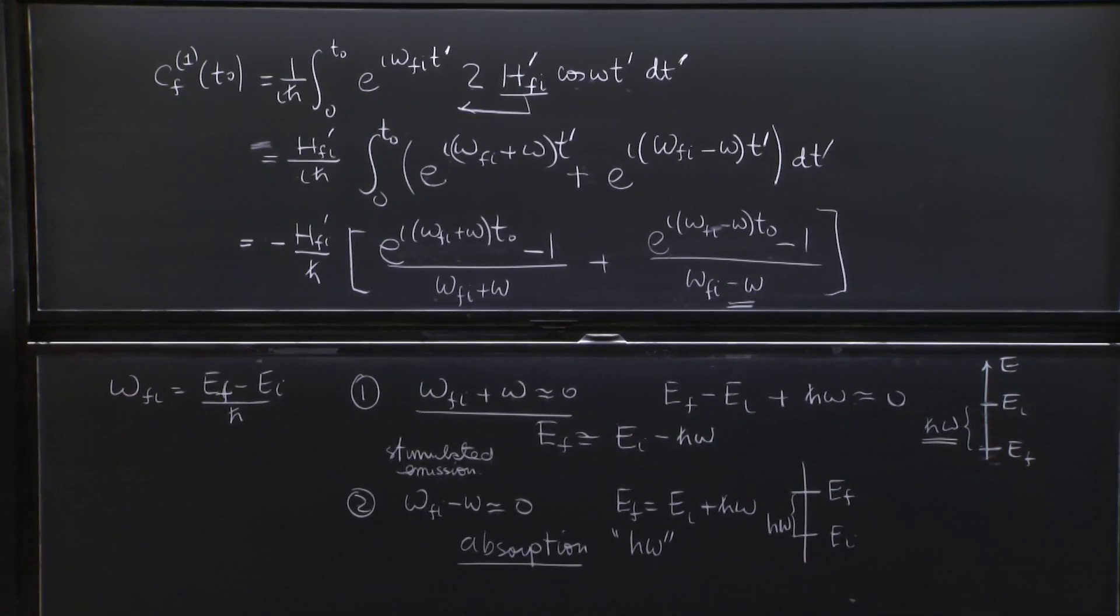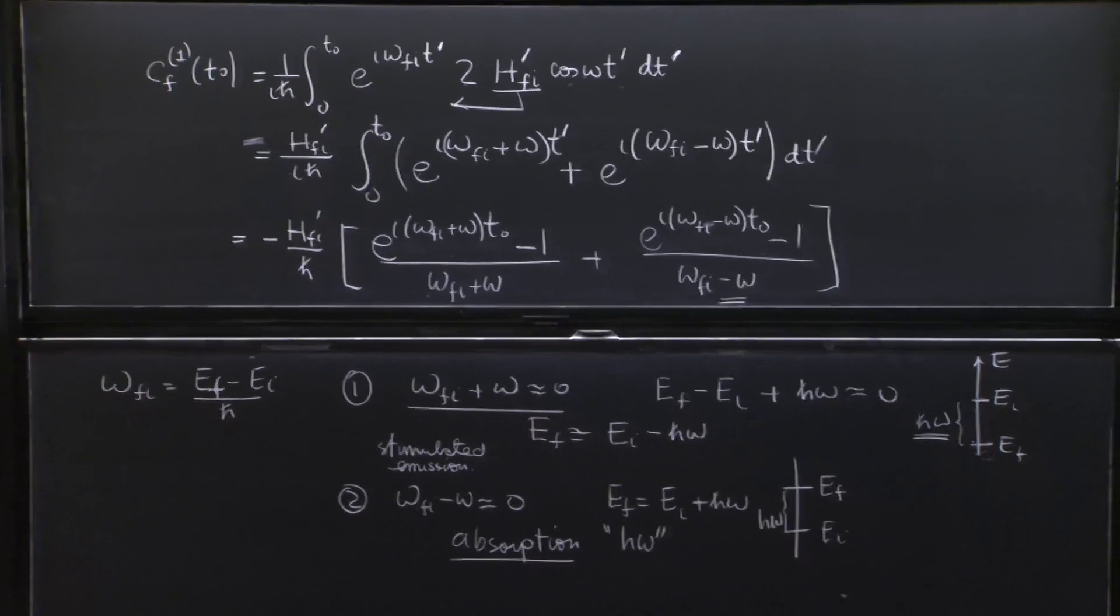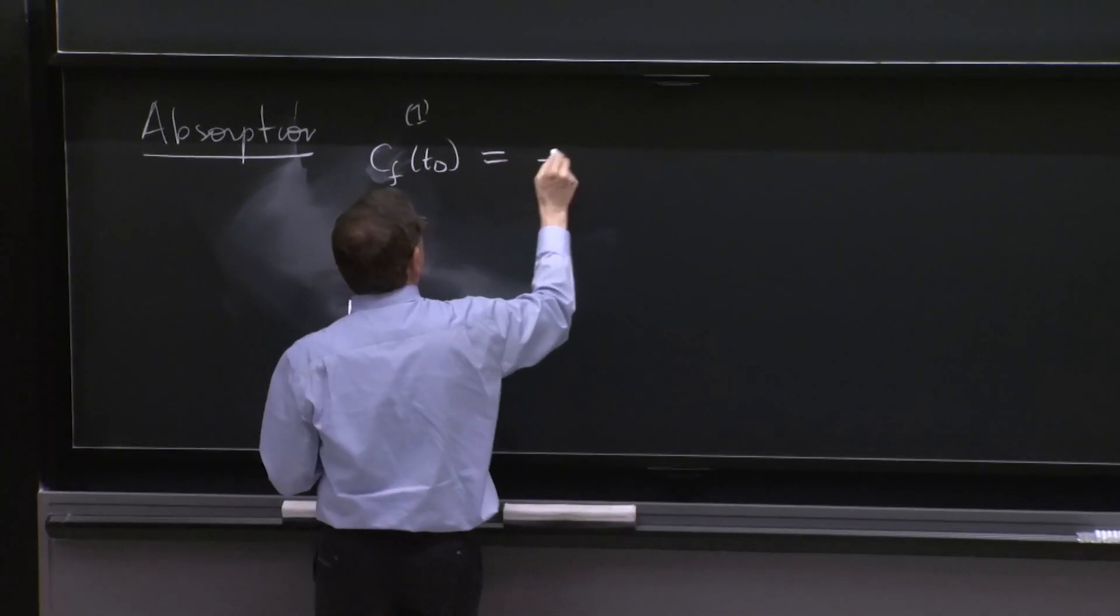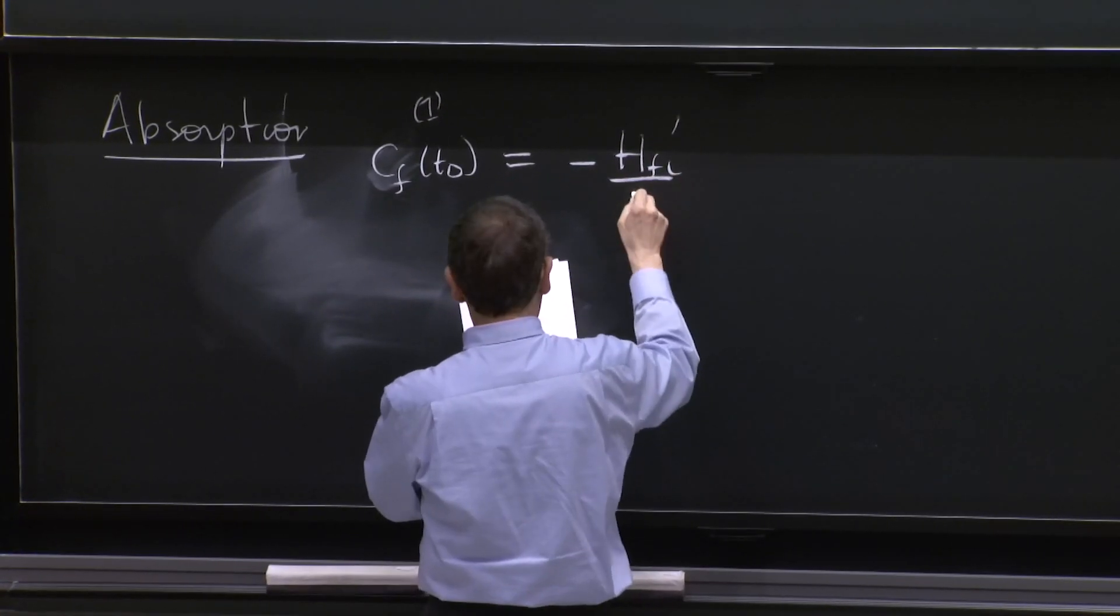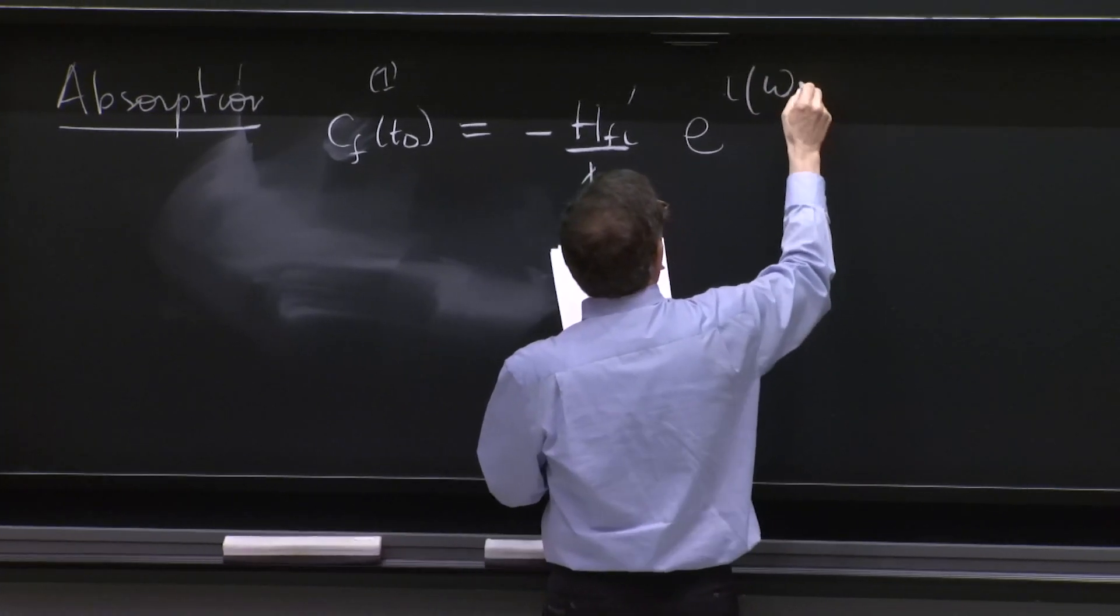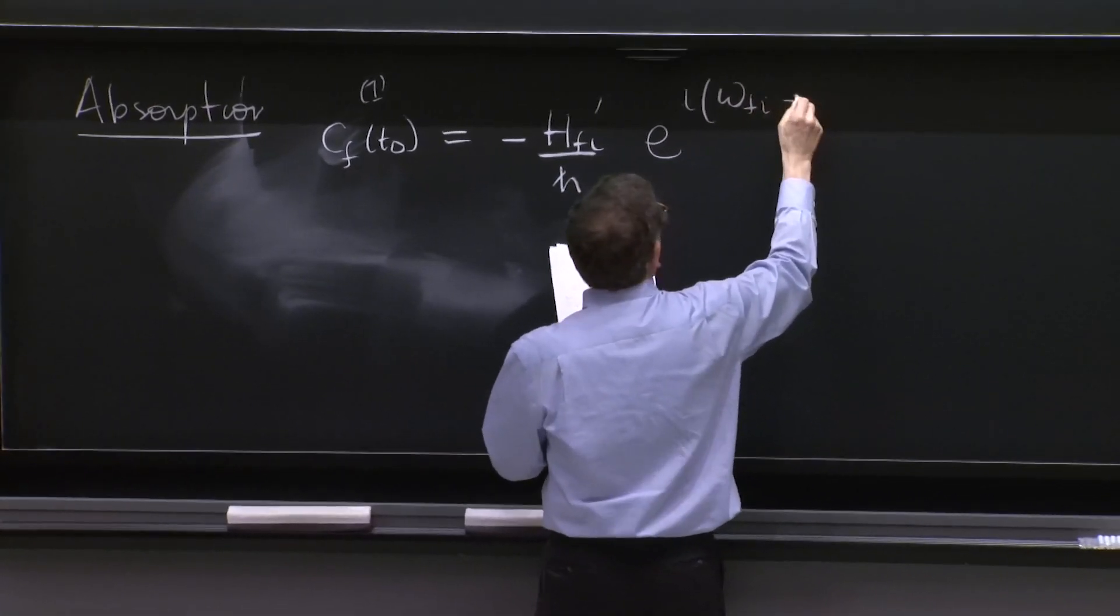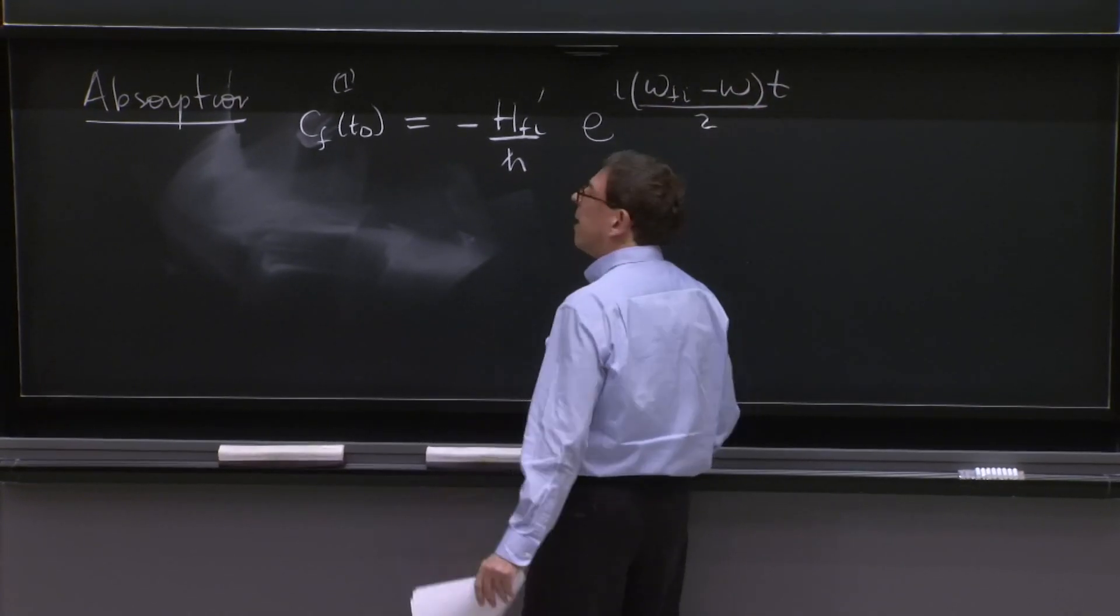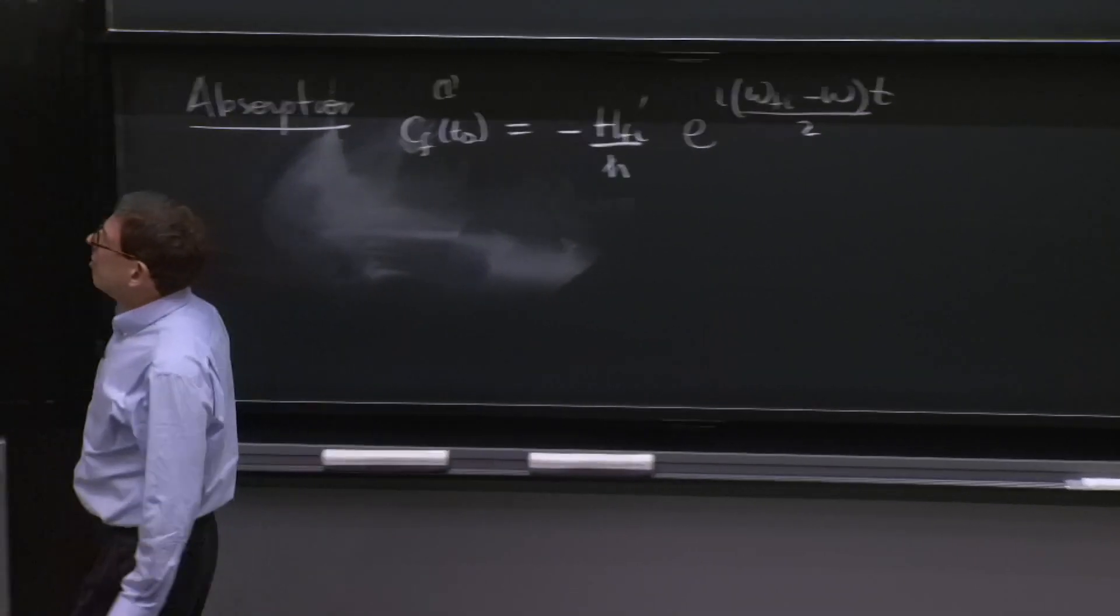And so what do we have? Cf of t0 1 minus hfi prime over h bar e to the i omega fi minus omega t over 2.